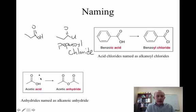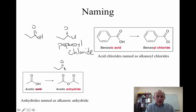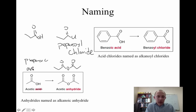Similarly, this carboxylic acid is called acetic acid. So we just remove the word 'acid' and add 'anhydride' — it's called acetic anhydride. So an anhydride derived from propanoic acid would just be called propanoic anhydride.